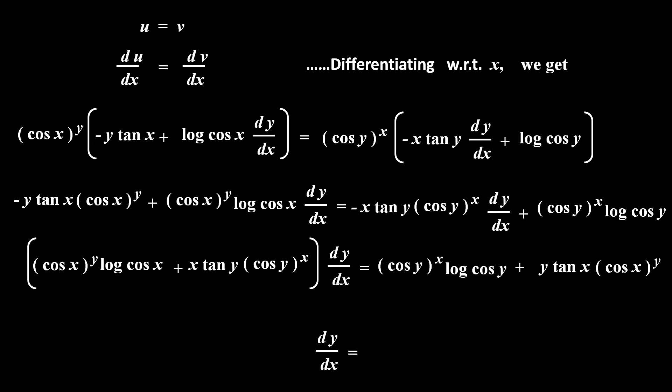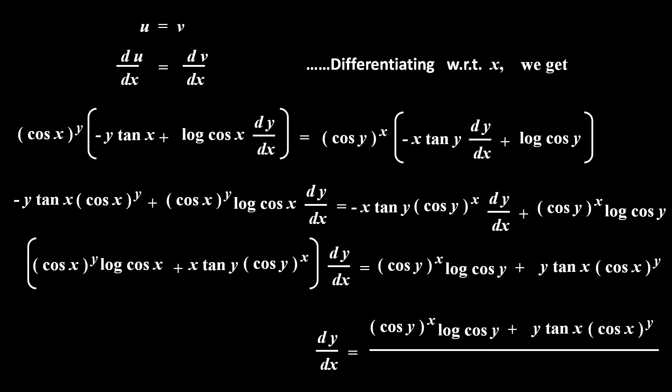Therefore, dy by dx is equal to: at the numerator, cos y raised to x into log of cos y, plus y tan x into cos x raised to y; upon, at the denominator, cos x raised to y into log of cos x, plus x into tan y into cos y raised to x. This is the value of dy by dx, means derivative of y with respect to x.